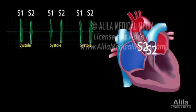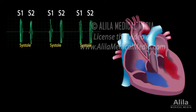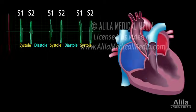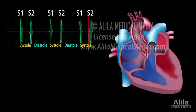The interval between S2 and the next S1 is when the ventricles relax and are filled with blood, called diastole. Diastole is longer than systole, hence the lub-dub, lub-dub, lub-dub.